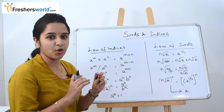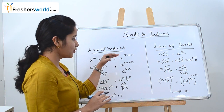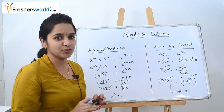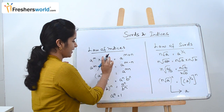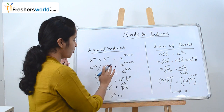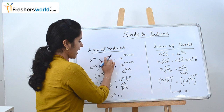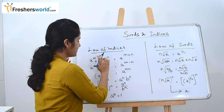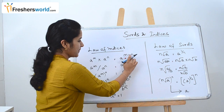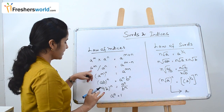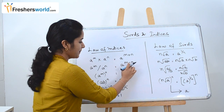These are just basic concepts you should know — you don't have to memorize all these formulas. Once you understand the concept, it will be very easy to solve the sums. The first law is a^m × a^n: when you have a common base, you add the powers, so it becomes a^(m+n). Similarly, a^m ÷ a^n is nothing but a^(m−n).